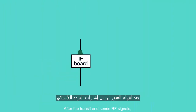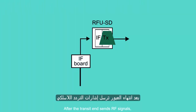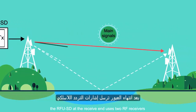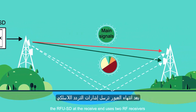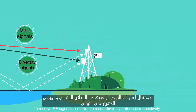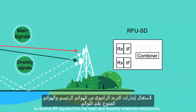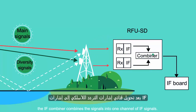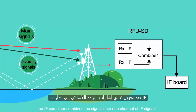After the transit end sends RF signals, the RFUSD at the receive end uses two RF receivers to receive RF signals from the main and diversity antennas, respectively. After the two channels of RF signals are converted into IF signals, the IF combiner combines the radio signals into one channel of IF signals.